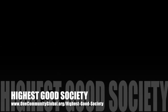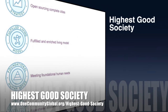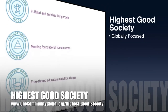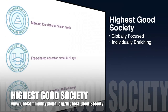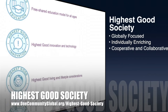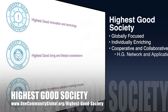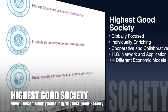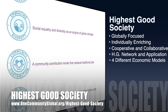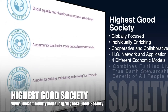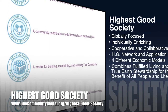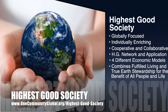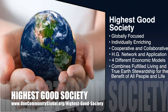One Community's approach to highest good society is globally focused, individually enriching, cooperative and collaborative. It includes a highest good network and application, four different economic models, and combines fulfilled living and true earth stewardship for the benefit of all people and all life on this planet.